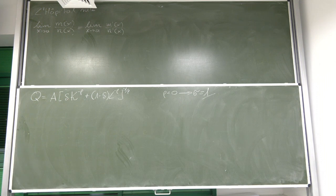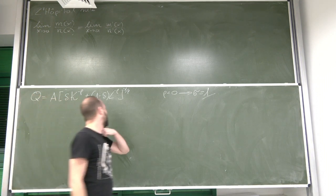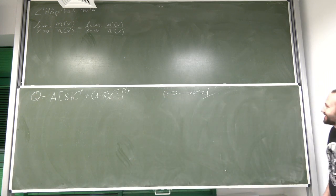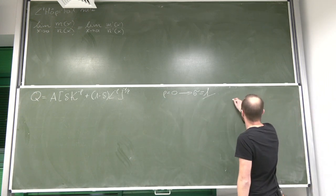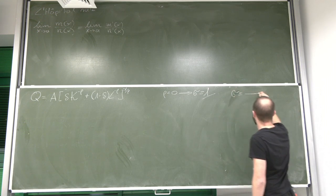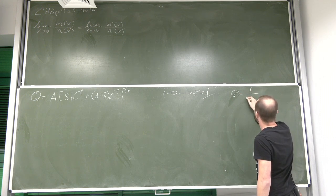Then we were able to actually calculate what is the elasticity equal to, denoted as sigma, and calculated that this is 1 over 1 plus rho.